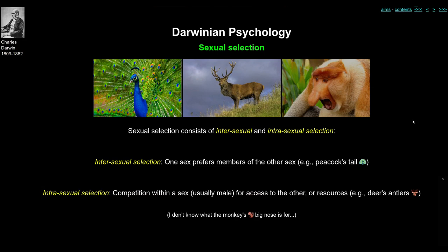Darwin talked about two kinds of sexual selection: intersexual and intrasexual. Intersexual selection is when one sex — for example females — prefers members of the other sex, such as a peahen preferring a particular kind of peacock's tail. Intrasexual selection is when competition within a sex, usually males, occurs and allows them access to the other sex or to resources. A good example is the deer's antlers — male deer have large, sharp antlers used as a symbol of dominance and in fighting for access to females or resources. The proboscis monkey's males also have a very large nose, related to aggression or other male characteristics.